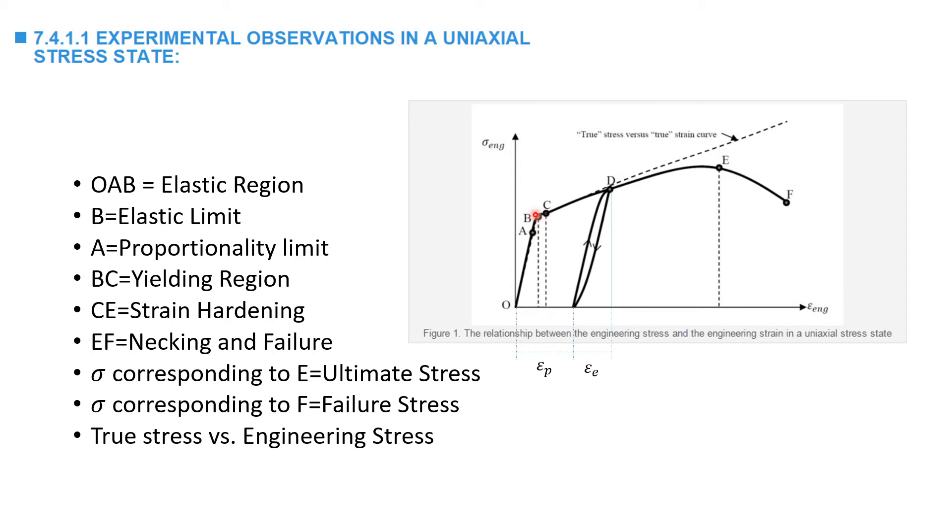Traditional steel exhibits a yielding region, here shown by the region between the points B and C. This region is characterized by extension accompanied by almost no increase in the force.